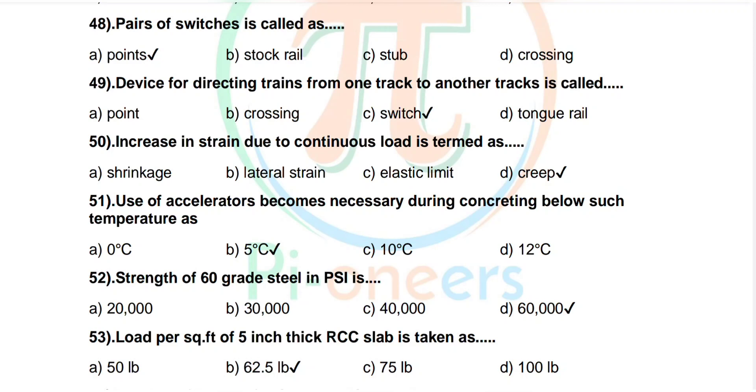Question number 48: A pair of switches is called as. Options are point, stock rail, stub, crossing. Correct answer: points.